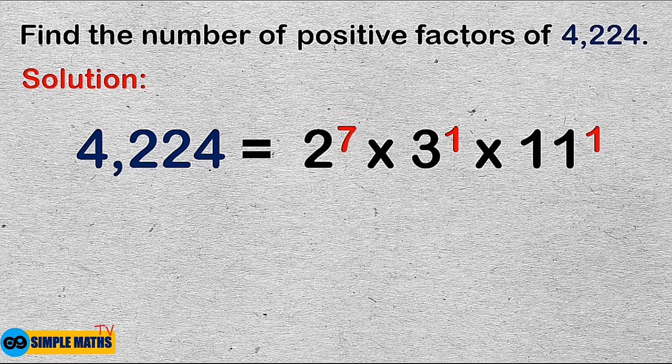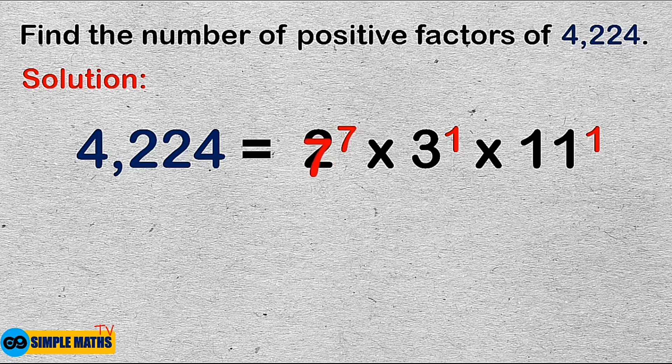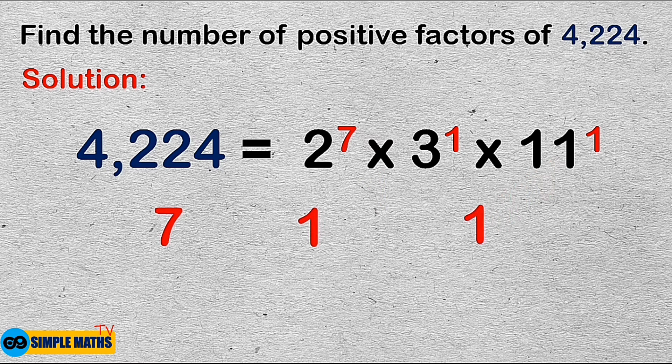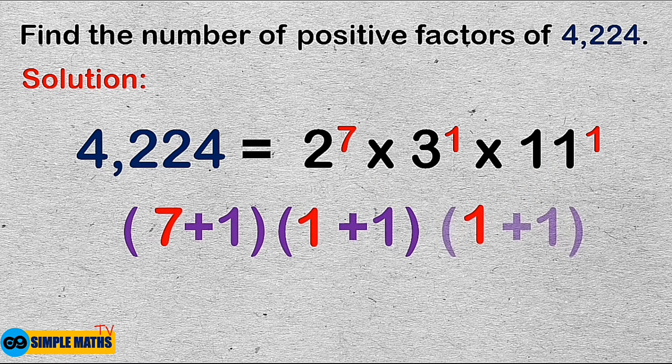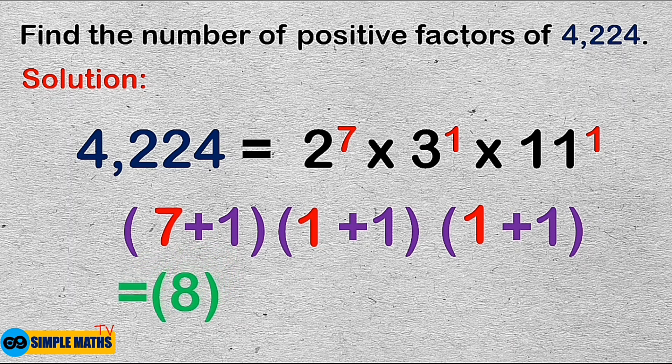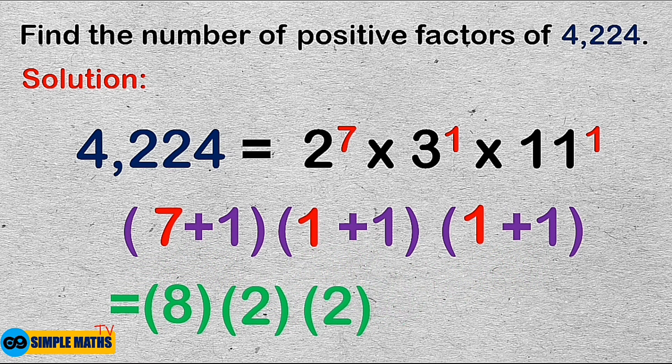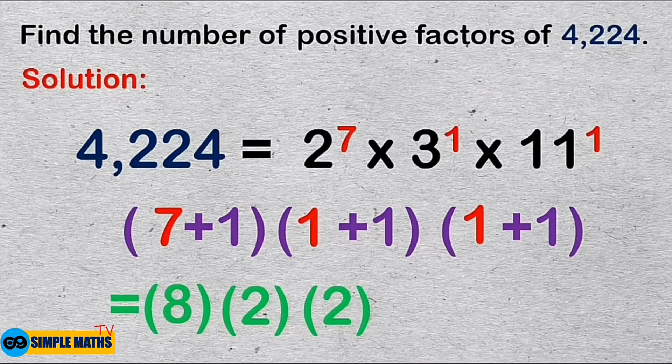Next, we take the exponent of each prime factor. These are 7, 1, and 1. Then, we add 1 to each exponent. 7 plus 1 is equal to 8. 1 plus 1 is equal to 2. And another 1 plus 1 is equal to 2.